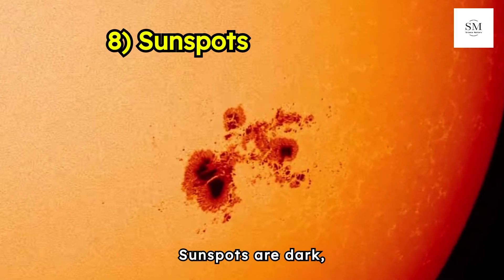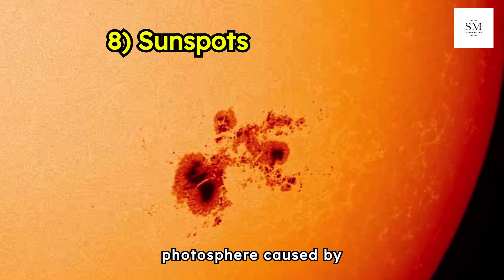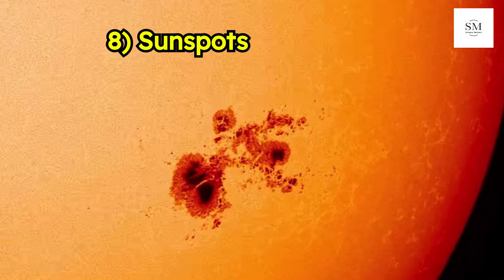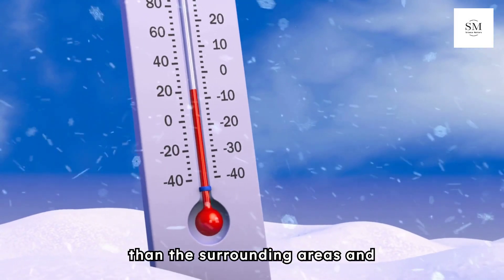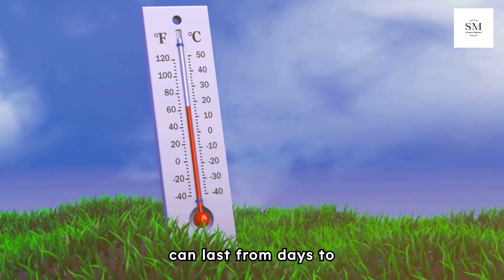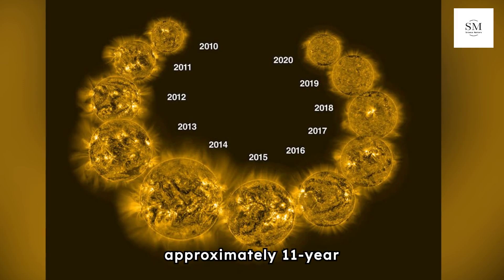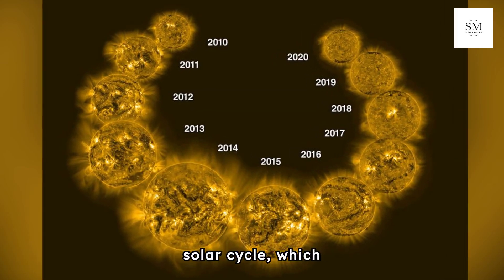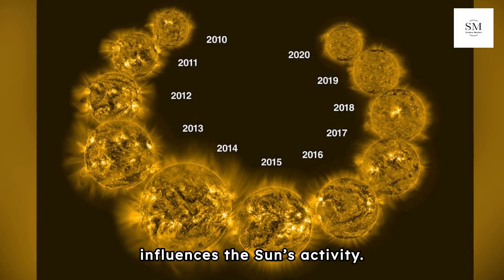Sunspots are dark, cooler regions on the photosphere caused by intense magnetic activity. They have temperatures lower than the surrounding areas and can last from days to months. Sunspots follow an approximately 11-year cycle, known as the solar cycle, which influences the Sun's activity.